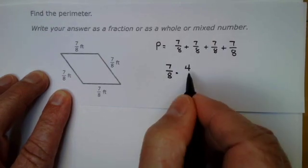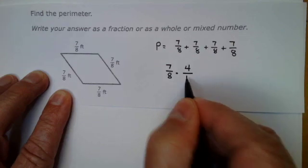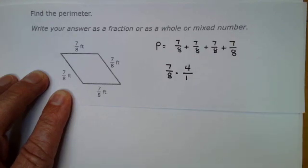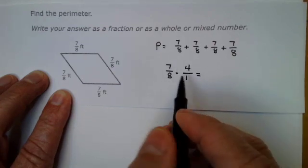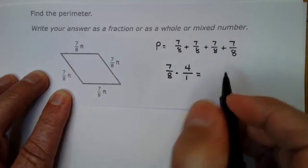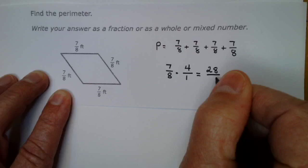If I multiply it by 4, I need to write 4 as a fraction. How do I write 4 as a fraction? Put it over 1. How do I multiply fractions together? I multiply the top numbers together and I multiply the bottom numbers together. 7 times 4, 8 times 1.